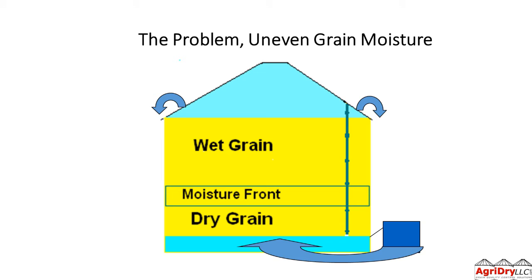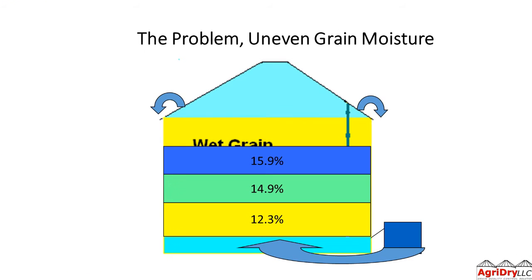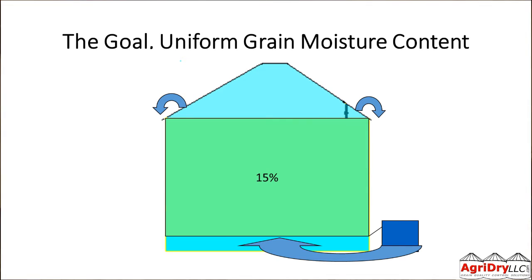Our problem is uneven grain moisture. We've got really dry grain on the bottom, about right in the middle, and wet on the top. How do we counteract this? We're looking for that magic 15% moisture content for long-term storage — uniform MC all the way through. So how do we do that?